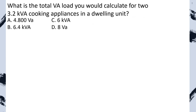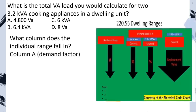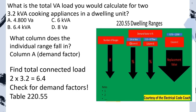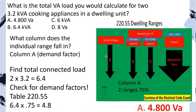Practice problem: What is the total connected load for two 3.2 KVA cooking appliances in a dwelling unit? Individual range falls into Column A. Find total connected load: 2 multiplied by 3.2 KVA equals 6.4 KVA. Check for demand factors: from the table, Column A for two ranges is 75%. Multiply: 6.4 multiplied by 0.75 gives our new reduced load. We select A.